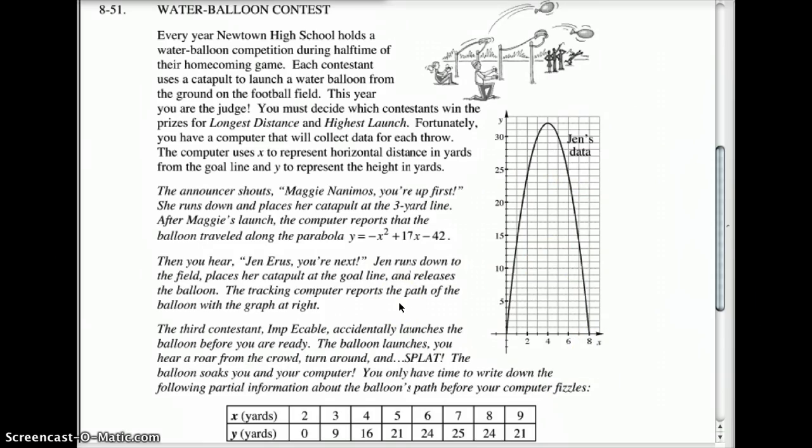Then, you hear over the announcement, Jen, you're next! Jen runs down to the field, places her catapult at the goal line, and releases the balloon. The tracking computer reports the path of the balloon based on the graph right here. You can use that graph, and from that graph, you're going to come up and put together the chart here.